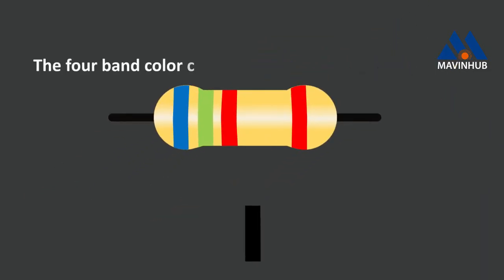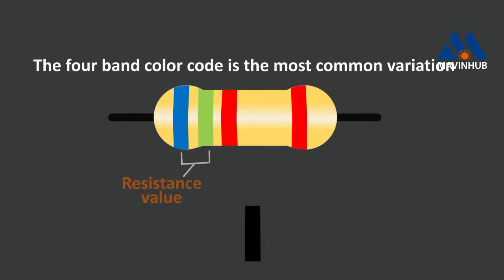The four-band color code is the most common variation. It has two bands for the resistance value, one multiplier, and one tolerance band.